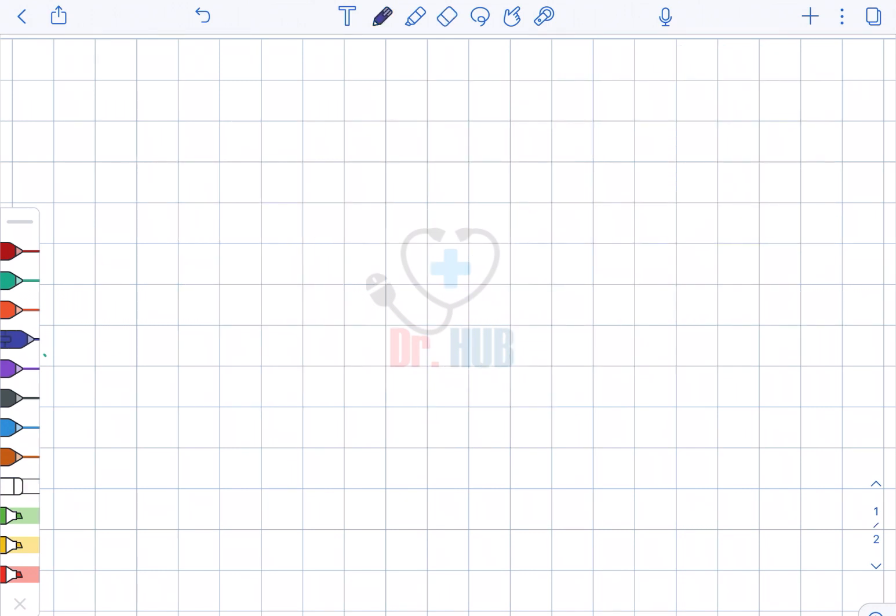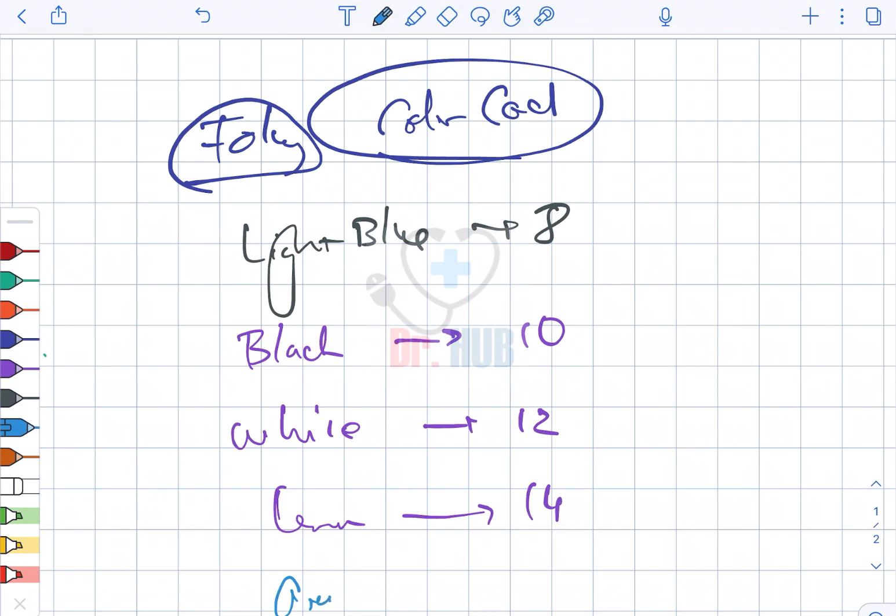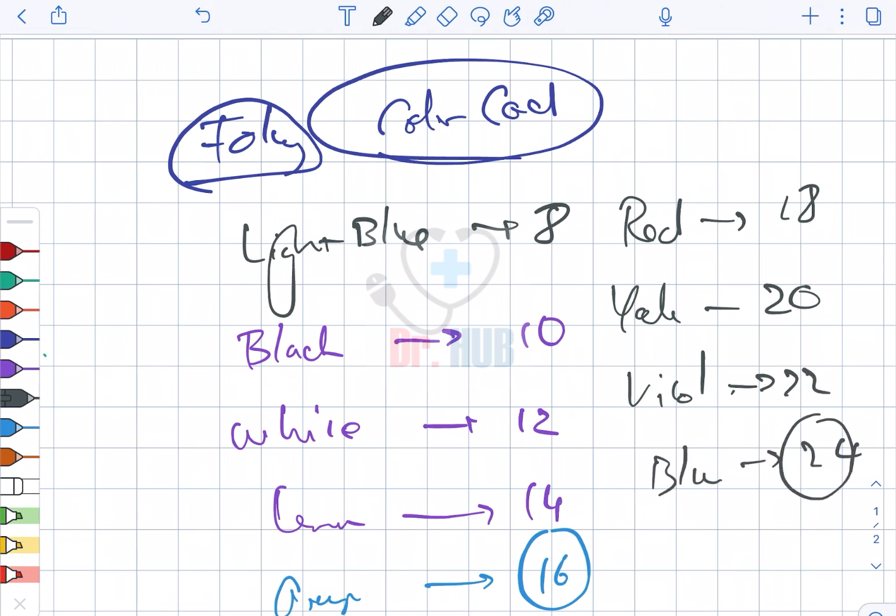Firstly, it begins with light blue, the color is 8. Next is black, which is 10. White is 12, green is 14, and orange is 16. Next, looking at red, red is 18, yellow is 20, violet is 22, and then comes blue, which is 24.